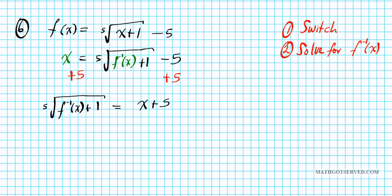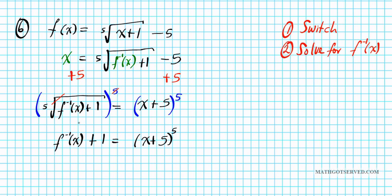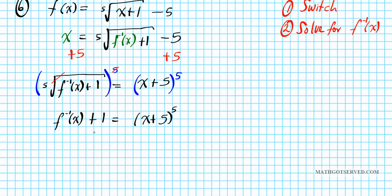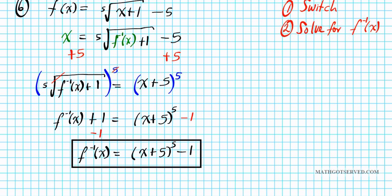To get rid of the fifth root, we raise both sides to the fifth power, because the fifth power is the inverse of the fifth root — they cancel each other out. That gives us f inverse of x plus one equals x plus five to the fifth power. To finish, we subtract one from both sides, yielding f to the negative one of x equals x plus five to the fifth power, minus one. There goes the inverse of our function f of x.